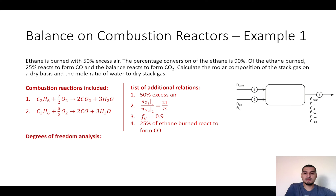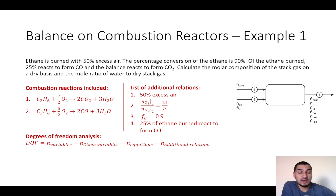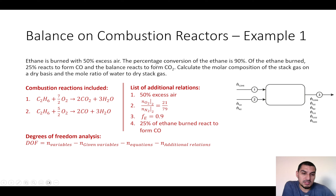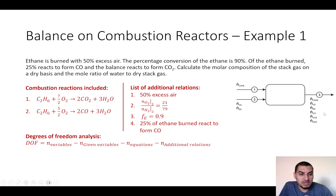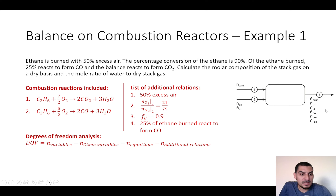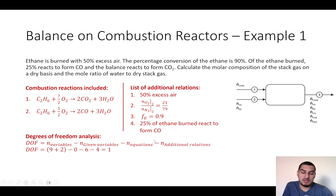For the degrees of freedom analysis using the extent of reaction method: we have 9 variables plus 2 extents of reaction, no given variables, 6 balance equations, and 4 additional relations. So the degrees of freedom is 9 + 2 − 0 − 6 − 4 = 1.